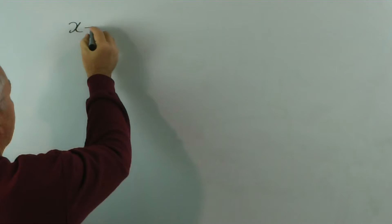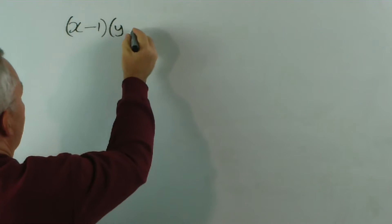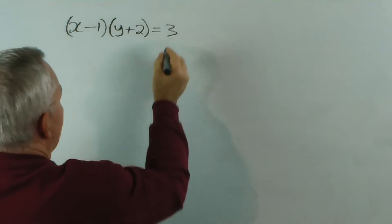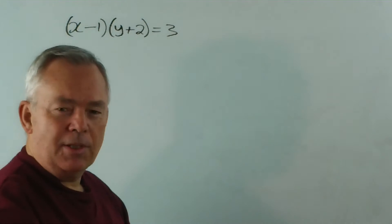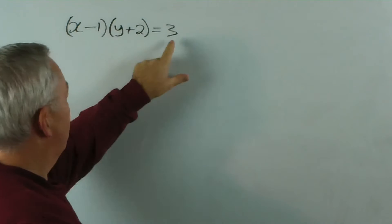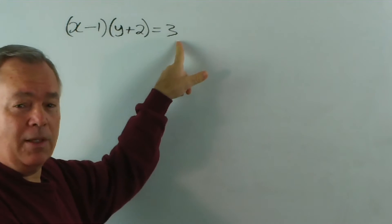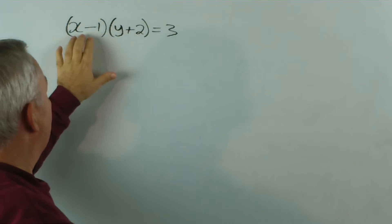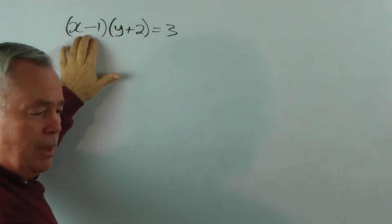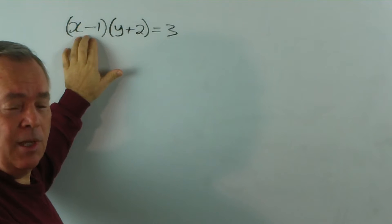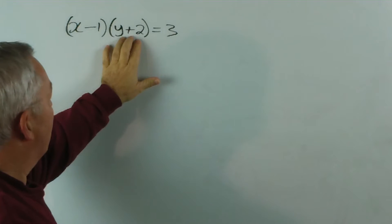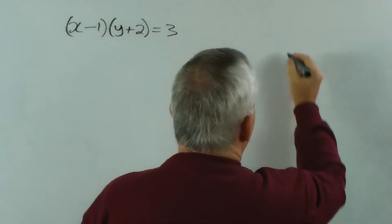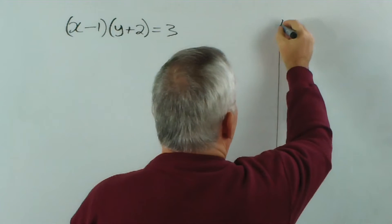You'll recall that if we have something like (x-1)(y+2) = 3, this is a structure that gives us asymptotes. We have a product of two terms giving us a non-zero value, which means that neither of these can be zero. So x cannot possibly be 1. That means there's no part of the graph touching x equals 1 and there's no part of the graph touching y equals negative 2.